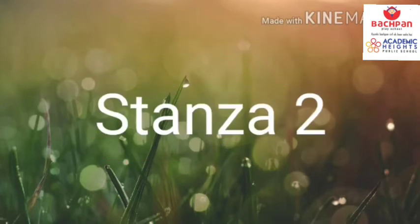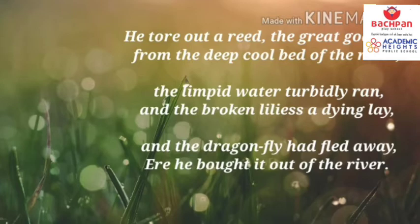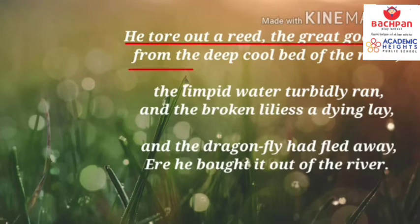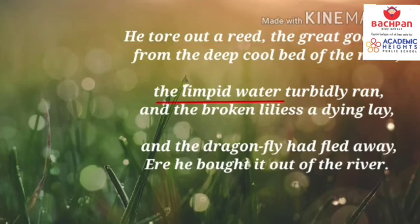Now understand stanza number two. 'He tore out a reed, the great god Pan, from the deep cool bed of the river. The limpid water turbidly ran and the broken lilies a-dying lay, and the dragonfly had fled away, till he brought it out of the river.' Key vocabulary: reed means a tall plant; limpid water means clear water; turbidly means muddy; ere means before; and fled means to run away. In these lines the poet tells an image of decay and death. In search of the reed he wants, Pan tears a single reed out of the river bed in search of Syrinx. As he tears the reed from the river, the clear water turns into muddy water and the beautiful lilies now lay down and dying.